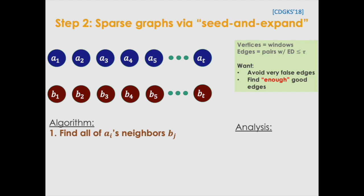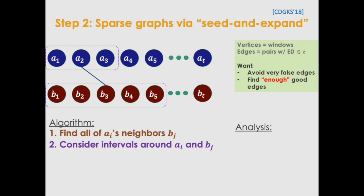So what do we do? Let's start again with an edge, say, between a2 and a3, and what we're going to do is we're going to find all of the neighbors of a2. Let's just say a2 only has one neighbor b3.